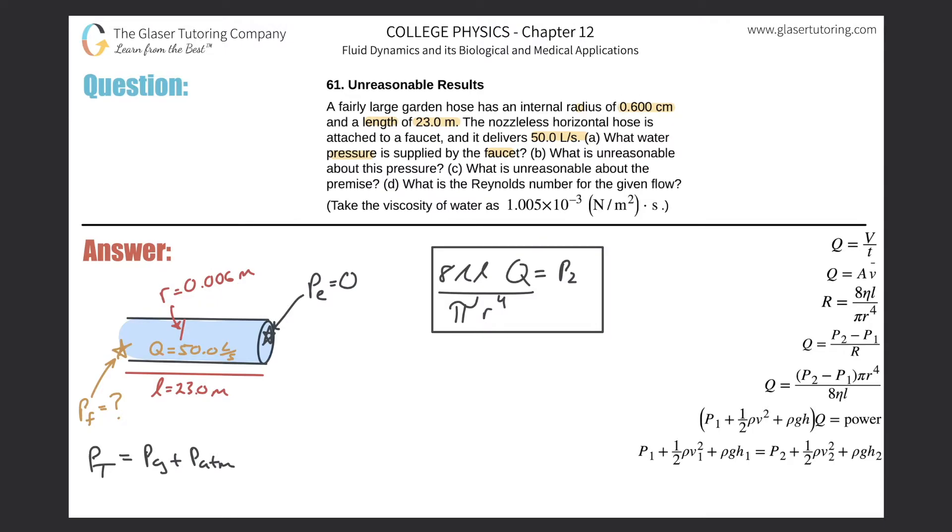The radius of the tube they also told us, but they gave it to us in centimeters, so I just did you the service of converting it to meters. You can just take this value and divide it by 100. How about the flow rate? Yes, we also know the flow rate, but that's in liters per second. Remember to convert this into meters cubed per second by dividing that value by 1000.